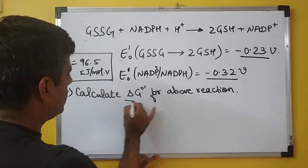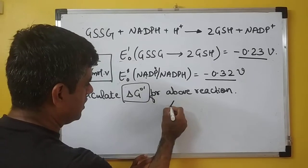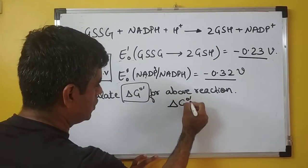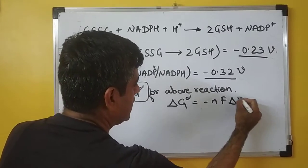We have to calculate the value of ΔG₀' for this reaction. We know that for a typical redox reaction, the formula is ΔG₀' = -nFΔE₀'.